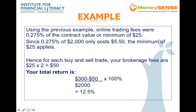Using the previous example, the online trading fees were 0.275% of the contract value, or a minimum of $25. Since 0.275% of $2,000 is only $5.50, the minimum of $25 applies. Hence, for each buy and sell trade, your brokerage fees are $25 × 2 = $50. The net total return is ($300 − $50) / $2,000 × 100%, which gives you a net return of 12.5%.